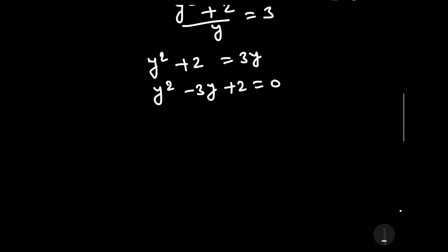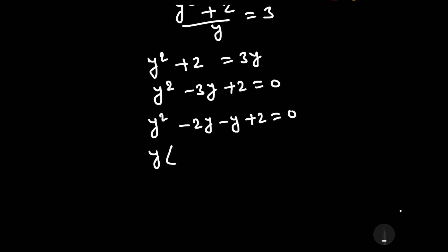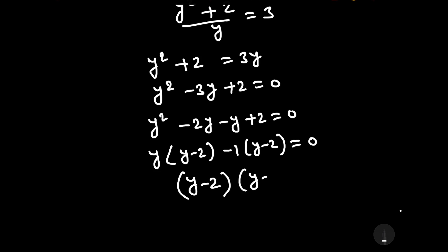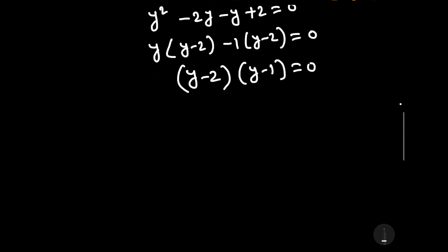By midterm splitting we can write it as y² minus 2y minus y plus 2 equals 0. Factoring gives y(y minus 2) minus 1(y minus 2) equals 0, which simplifies to (y minus 2)(y minus 1) equals 0. Therefore either y is equal to 2 or y is equal to 1.